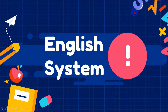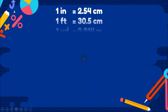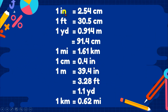Now let's convert units involving the English system. It's very important to be familiar with these conversions: 1 inch = 2.54 cm; 1 foot = 30.5 cm; 1 yard = 0.914 m (or 91.4 cm); 1 mile = 1.61 km; 1 cm = 0.4 inches; 1 meter = 39.4 inches = 3.28 feet = 1.1 yards; 1 kilometer = 0.62 miles. These conversions are the basis for all our English system work.